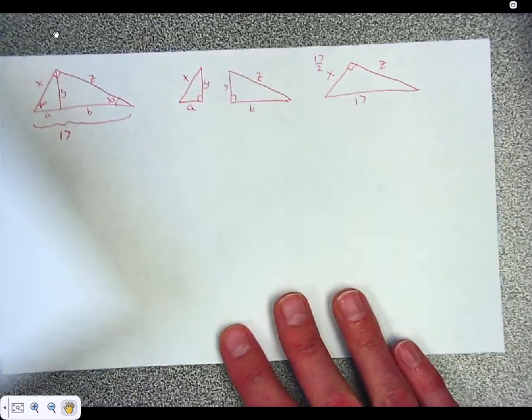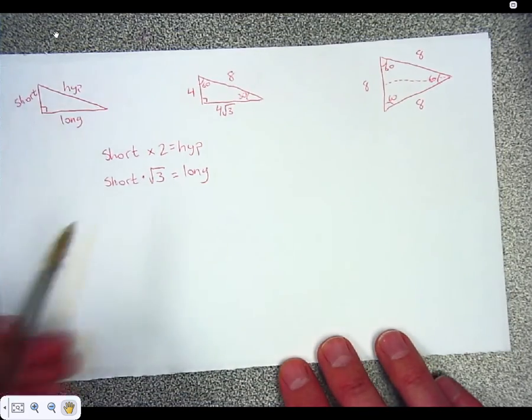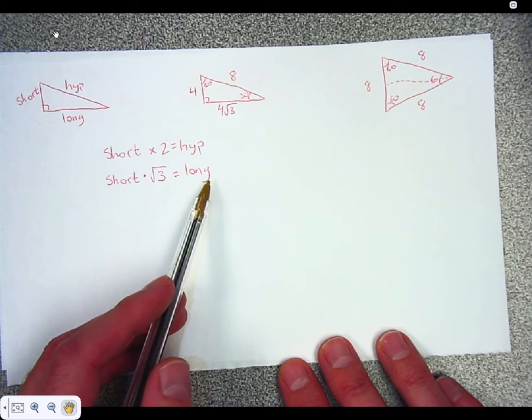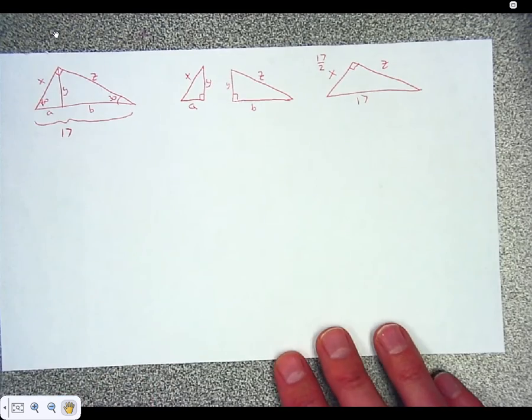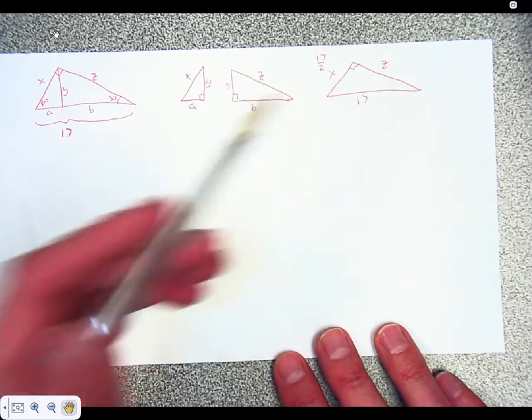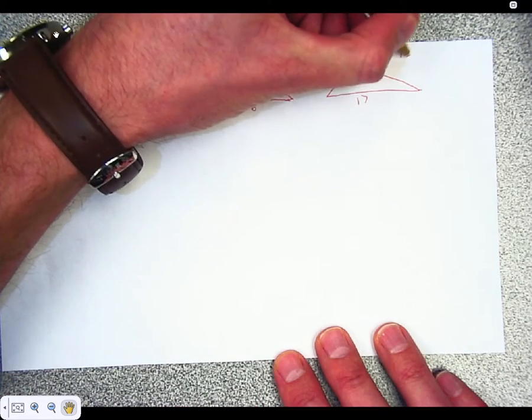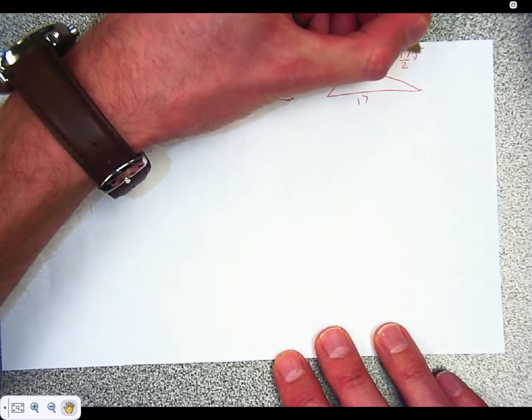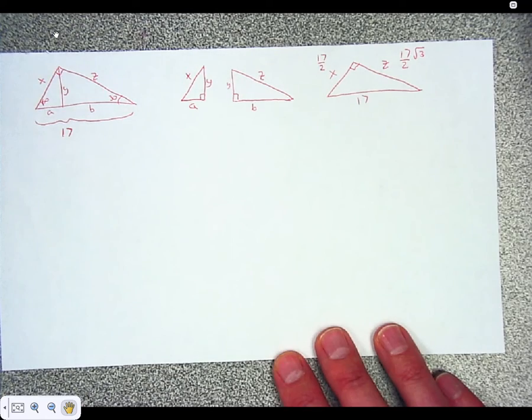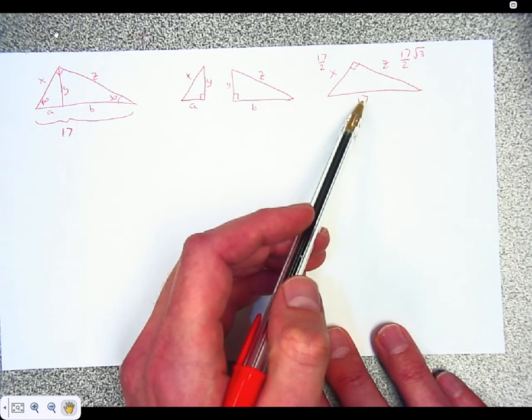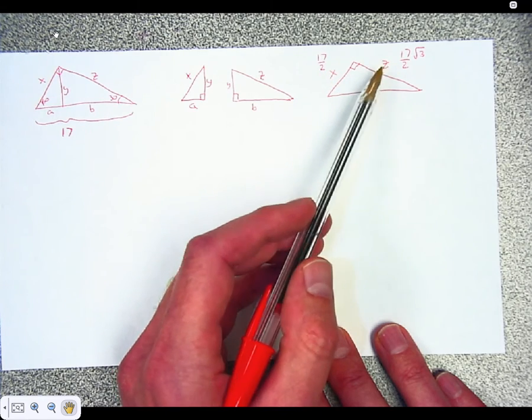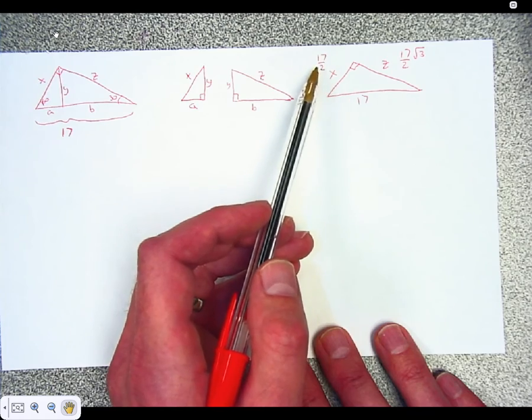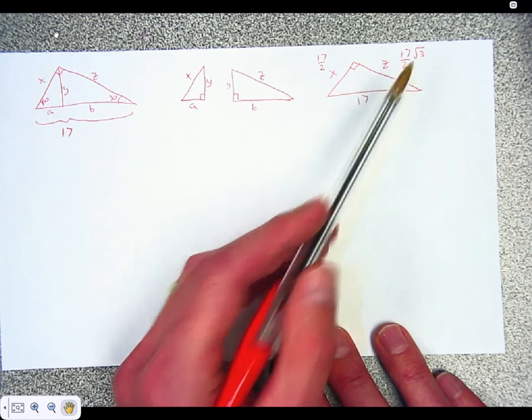All right, we also had a relationship that said if we know the short side, we can find the long leg by multiplying it by the square root of 3. I know the short leg. I can find the long leg. Z is going to have to be 17 over 2 times the square root of 3. Because that's what the relationship is. That's what Pythagoras tells us. So just by using those relationships that the short leg is half of the hypotenuse, and the long leg is taking whatever the short leg is times the square root of 3, I've already got three answers.